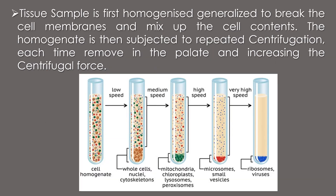In differential centrifugation, a tissue sample is first homogenized to break the cell membrane and mix up the cell contents. The homogenate is then subjected to repeated centrifugation, each time removing the pellet and increasing the centrifugal force.